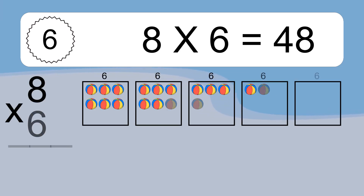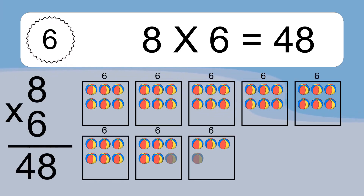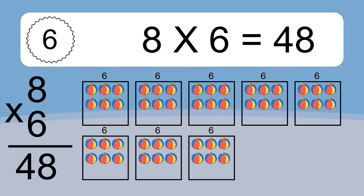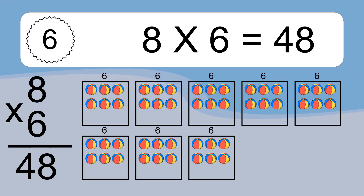8 times 6 equals what? 8 times 6 equals 48. We have 8 boxes and each box has 6 colorful balls inside. If you count all the balls in all the boxes together, you will have 8 times 6 balls. This equals 48 balls.